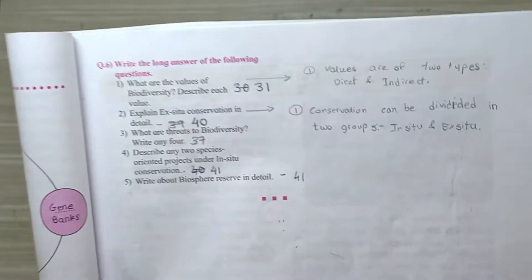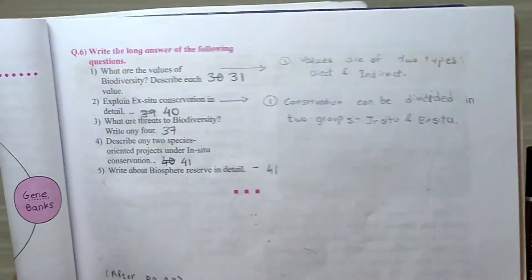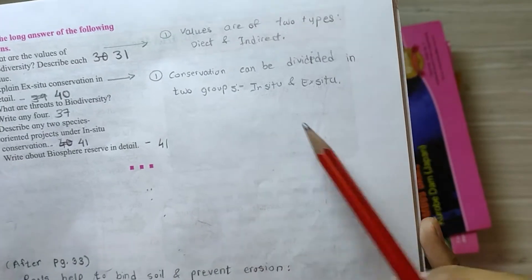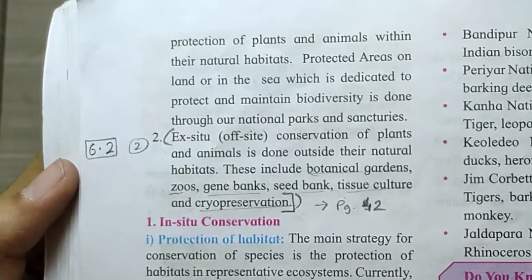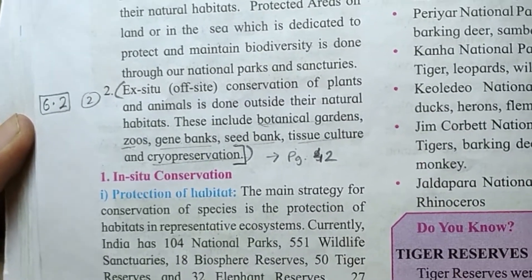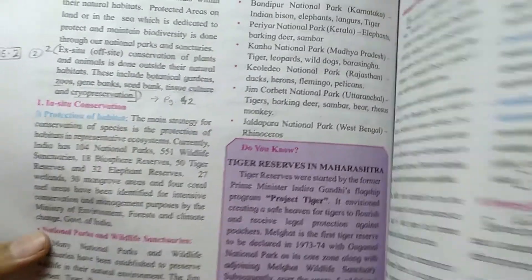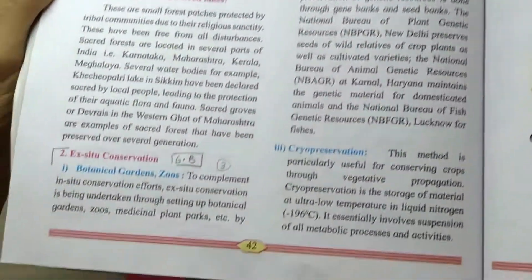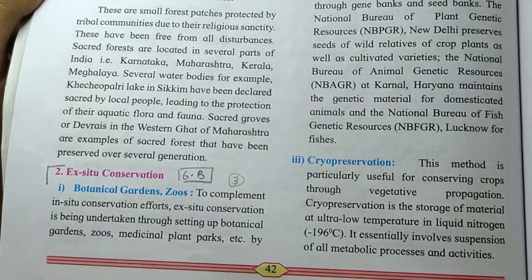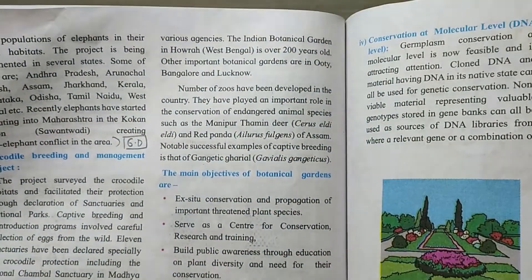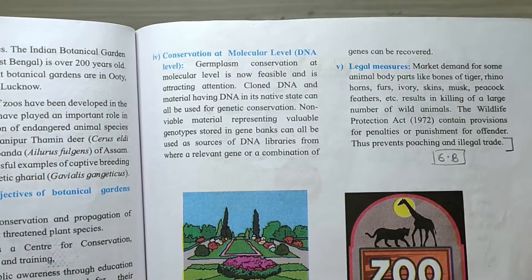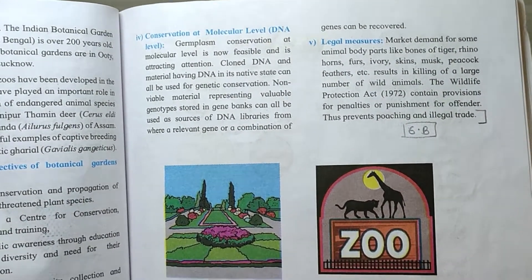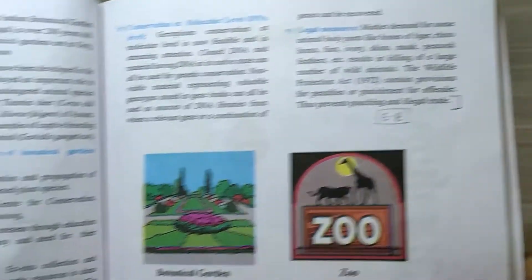The next question is question number two, explain ex situ conservation in detail. The first one will be conservation can be divided in two groups, in situ and ex situ conservation. The answer is on page number 40. The first point will be ex situ conservation of plants and animals is done outside their natural habitats, these include botanical gardens, zoos, gene banks, etc. The next point will be on page number 42. You can see this paragraph ex situ conservation, you have to write all the points.